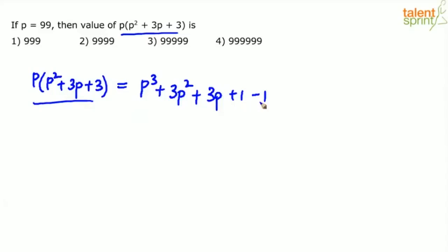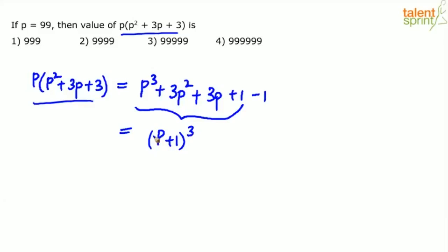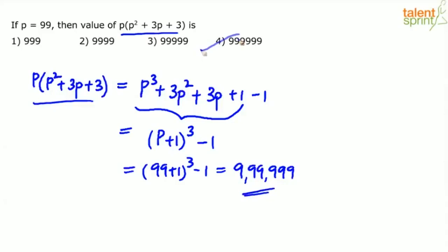Now add and subtract 1: p³ + 3p² + 3p + 1 − 1. The first four terms form (p+1)³. So the expression equals (p+1)³ − 1. With p = 99: (99+1)³ − 1 = 100³ − 1 = 1,000,000 − 1 = 999,999. Option 4 is the correct answer.